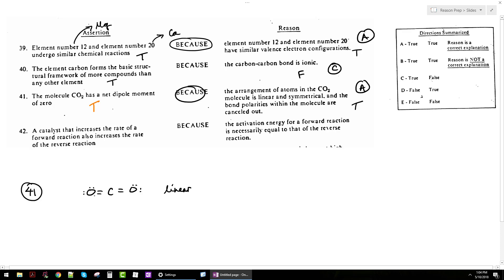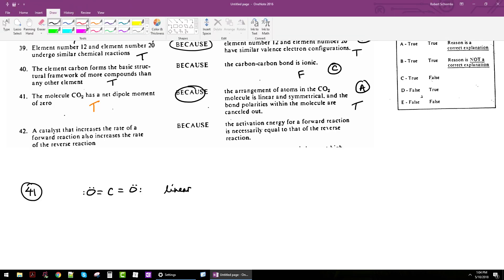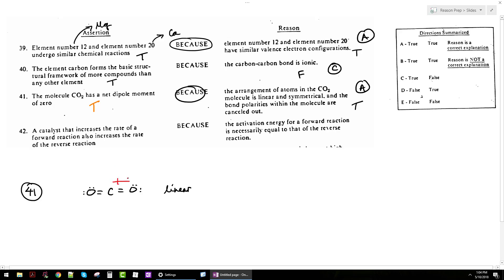Remember, the bonds here are polar. There is some electron density being pulled towards the oxygens because they are more electronegative than carbon. So this is slightly negative, slightly negative, and slightly positive. But notice this cancels - the negative pulled in this direction and the negative pulled in the other direction cancel. That's why you get no dipole moment. So 41 is indeed true, true, and A means true, true CE.